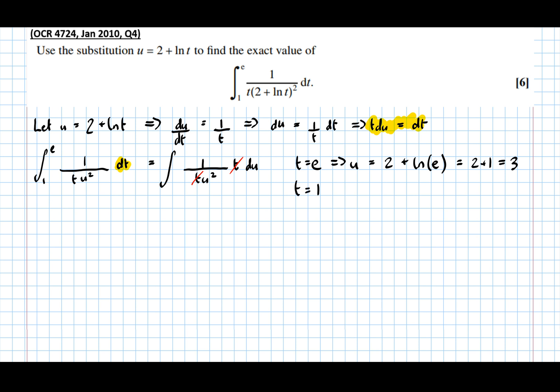When t equals 1, that means u equals 2 plus log of 1, log of 1 is just 0, equals 2. So our new limits are 3 and 2.